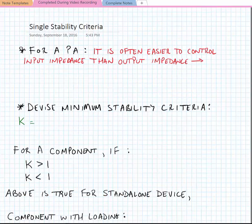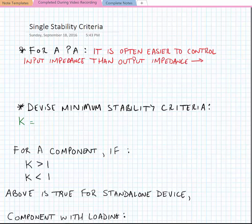Depending upon the type of amplifier that we're looking at, it can be easier to control the source impedance or the load impedance. For instance, for a low noise amplifier, typically the input is connected to the antenna and the output is connected to some fixed impedance on chip, so it might be easier to control the load impedance.